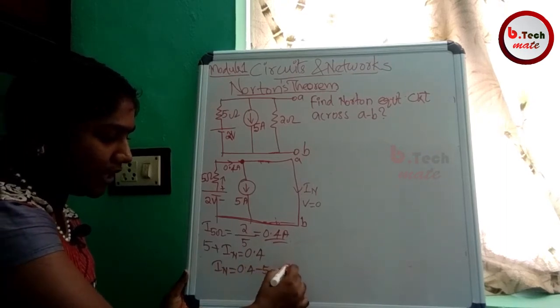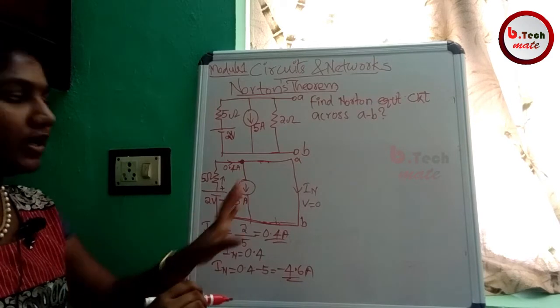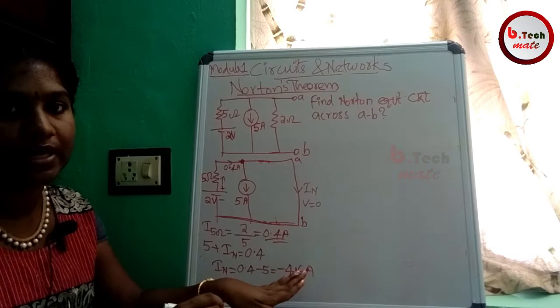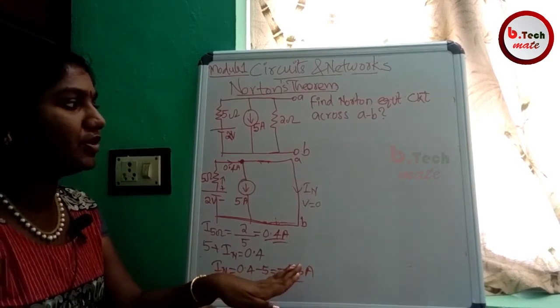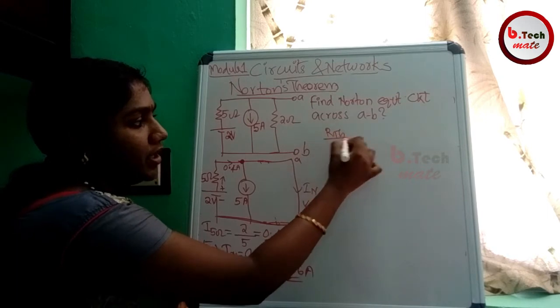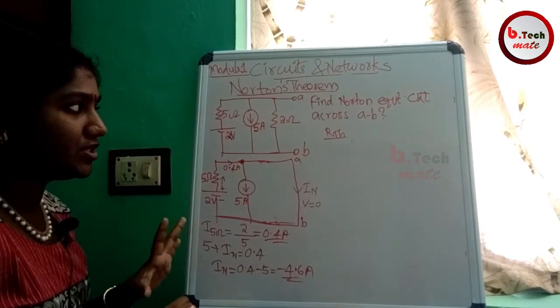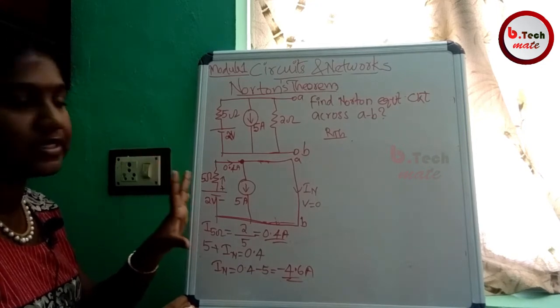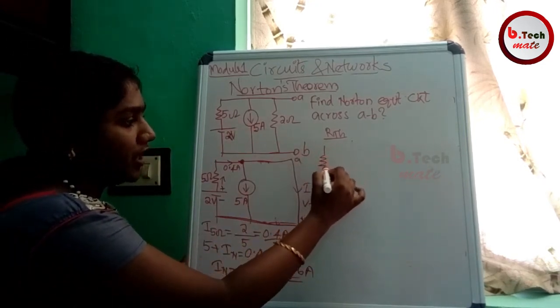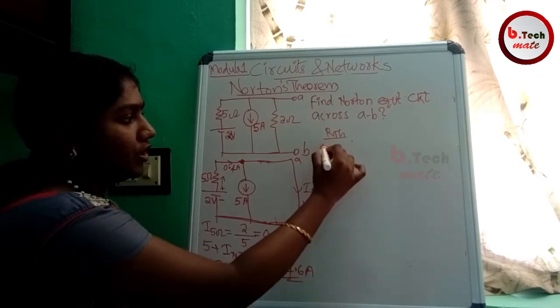Then we will get the current. Norton current In equals minus 4.6 amps. We will find our Norton equivalent source. In goes above 5 ohms, 2 ohms and parallel.